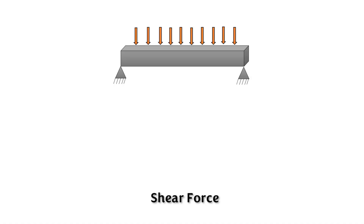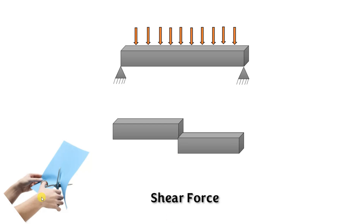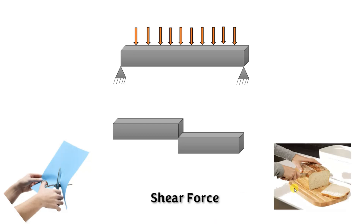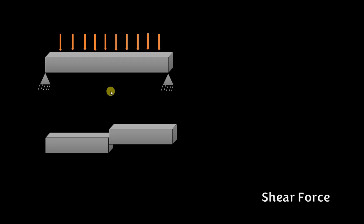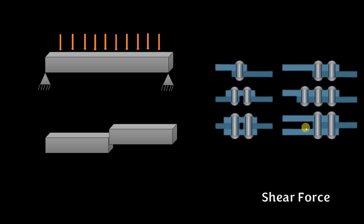Next is shear force. When the load is applied on a beam, it tends to shear off the beam into pieces. It is the unbalanced vertical force to the right or left of the section. For example, when you cut paper with scissors or cut a bread loaf, you are applying shear force. To resist shear force in beams, we have to provide shear reinforcement. Another example is rivet joint connections.